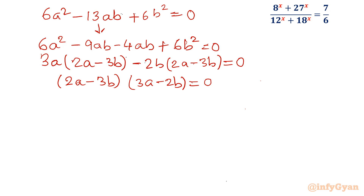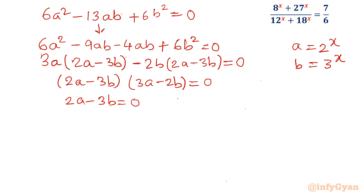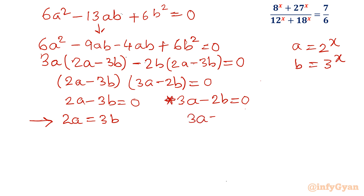Let us put back the values: a is 2 raised to the power x, and b is 3 raised to the power x. Either 2a minus 3b equals 0, which gives 2 times 2 power x equals 3 times 3 power x, or 3a minus 2b equals 0, which gives 3 times 2 power x equals 2 times 3 power x. So we have two equations.